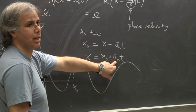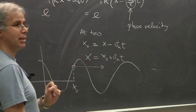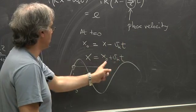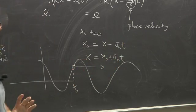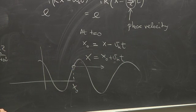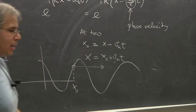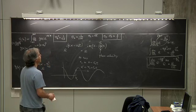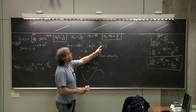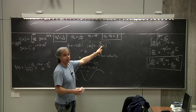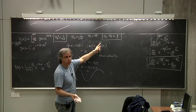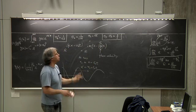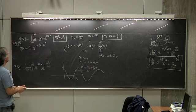It looks like a simple motion in time — at time equals zero it is this, and then it moves. This is clear. I still don't know what omega of k behaves as a function of k, and therefore I don't know V of k as a function of k. Let us assume that there is such a thing.